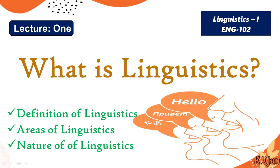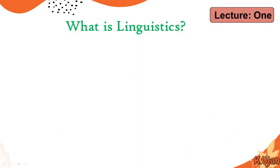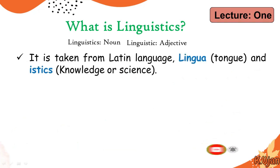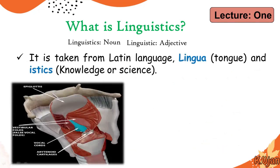Let's talk about our today's topic. Here is the definition: what is linguistics? The word 'linguistics' is a noun which means the study of language. There is also the term 'linguistic' — not 'linguistics' — which is an adjective. It is taken from the Latin language: 'lingua' means tongue, and '-istics' means knowledge or science.